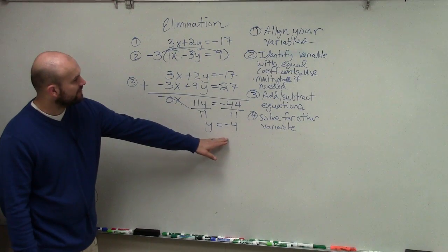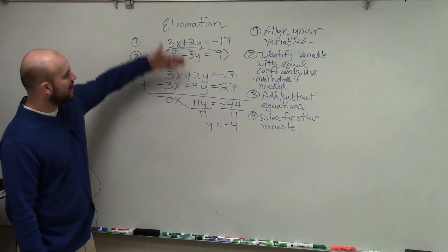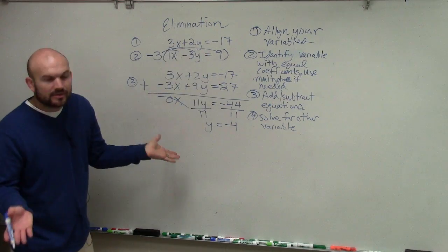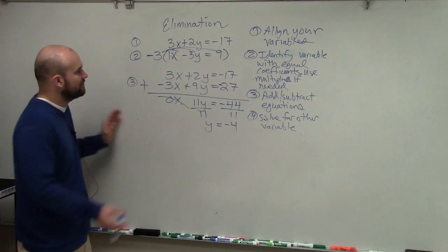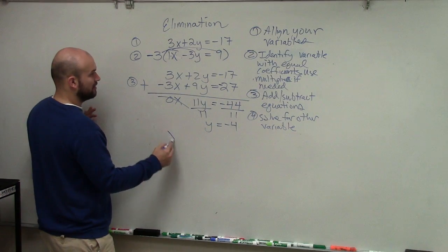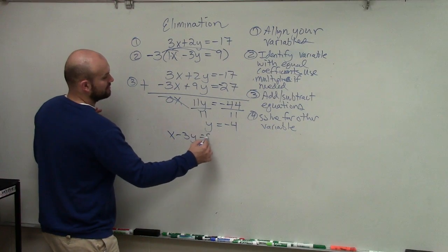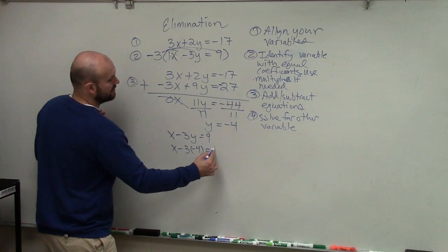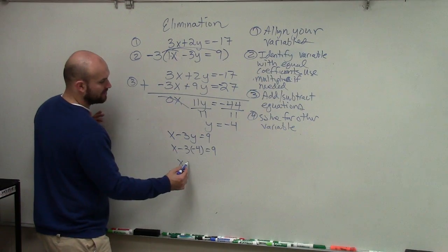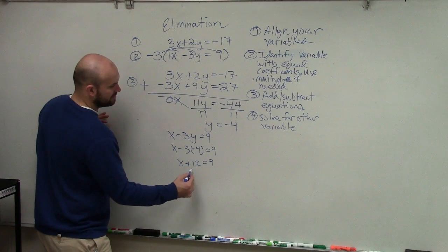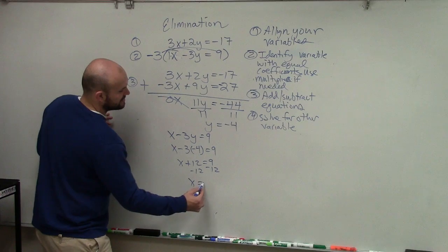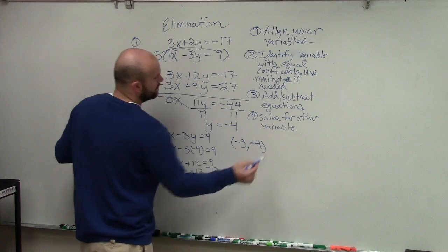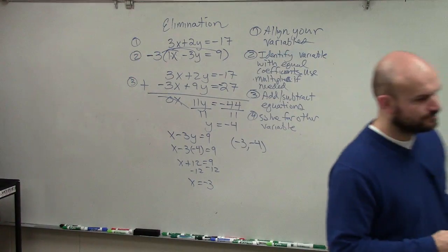Now that y equals negative 4, I need to find the value of x. I can plug it into any one of my equations. I'll choose the original equation: x minus 3y equals 9. Substituting y equals negative 4: x minus 3 times negative 4 equals 9. Negative 3 times negative 4 is positive 12, so x plus 12 equals 9. Subtract 12 from both sides: x equals negative 3. So the solution is negative 3, negative 4.